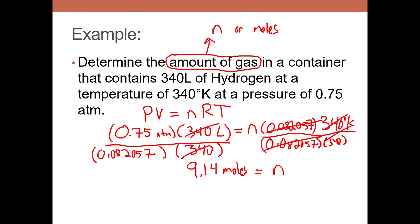Some of you might wonder: why can't we just divide 340 liters by 22.4? Remember what we said in the moles unit — 22.4 liters per mole is only valid at standard temperature and pressure. Here our temperature is 340 K and pressure is 0.75 atm — that is not standard, so we cannot use 22.4. When temperature and pressure change, the ratio of amount to volume is no longer 22.4 at different conditions.